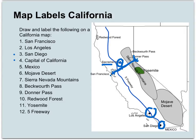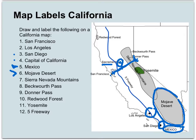Mexico is the country south of California, so there you see it labeled down there just below California. The Mojave Desert takes up this huge area just east of Los Angeles and kind of San Diego and out in there.